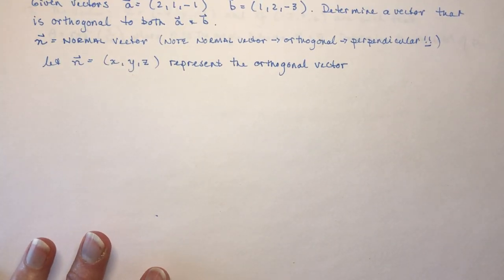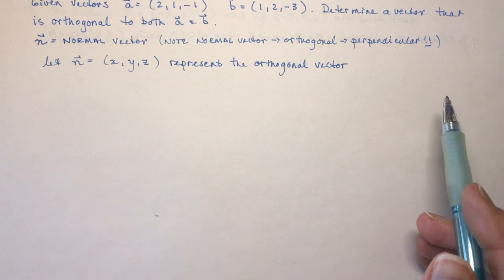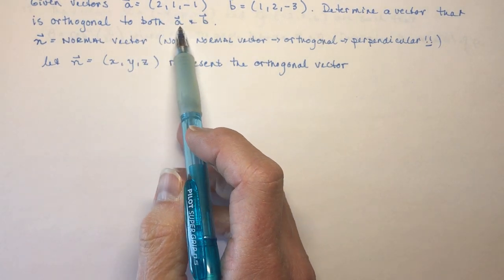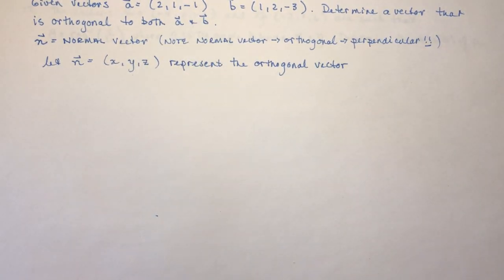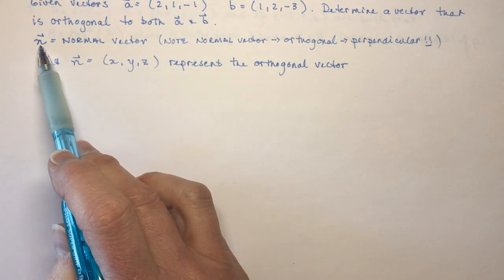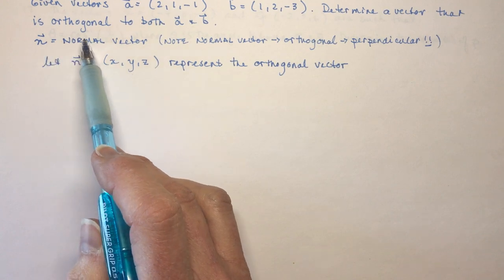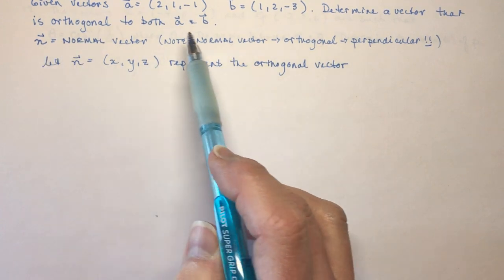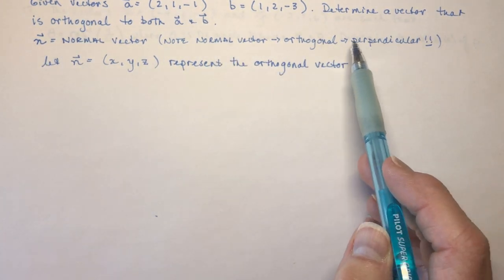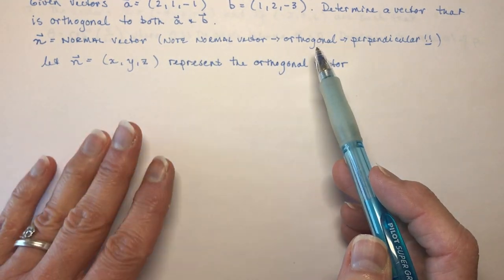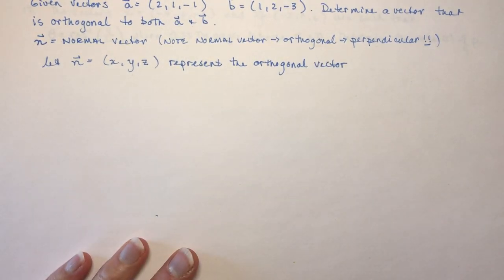Given vectors A, 2, 1, and minus 1, and B, 1, 2, minus 3, determine a vector that is orthogonal to both vector A and vector B. Okay, so the first thing, you're going to call the vector the normal. This is the normal to the vectors, or it is orthogonal, or it is perpendicular, all meaning the same thing. We're talking about a perpendicular vector.